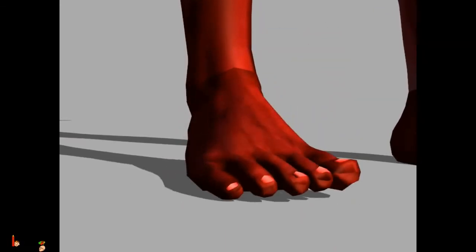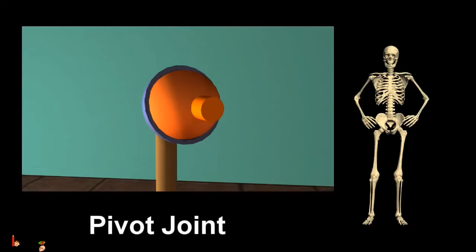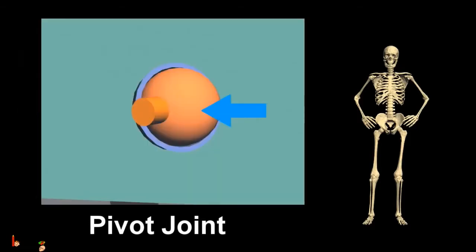Knees, elbows, fingers, and toes in our body have hinge joints. The pivot joint has one bone with a projection which fits into the ring-like ligament of another bone.